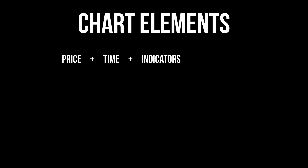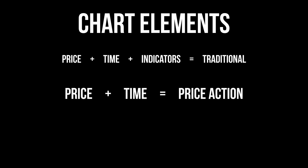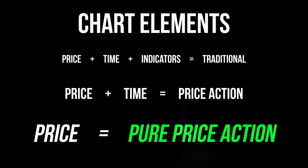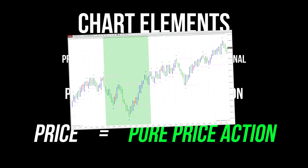These three elements make up the traditional chart design. From this point, some traders drop the use of indicators, the idea being that indicators are based on price anyway, so why not use price directly — this is called price action trading. A more minimalist trader can go another step further and eliminate the element of time. This results in pure price action as your guide to trading, and this is done using constant volume charts.